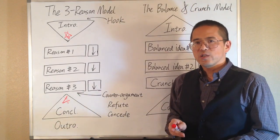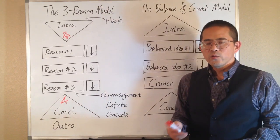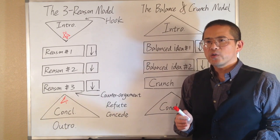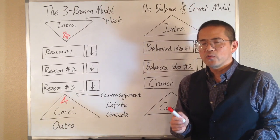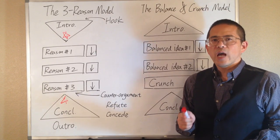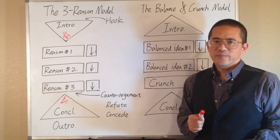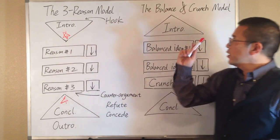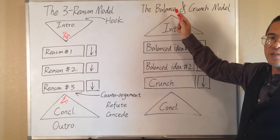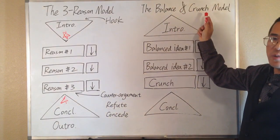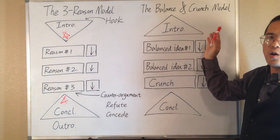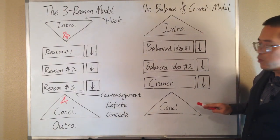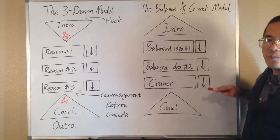In real world, the value of our writing mostly depends on whether we can create value for our readers, rather than whether we can present our own opinion clearly. So sometimes we may want to consider a different writing model. This model is what I called the balance and crunch model. This model could also use five paragraphs, including one introduction paragraph, one conclusion paragraph, and three body paragraphs.